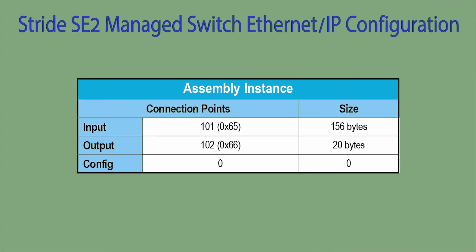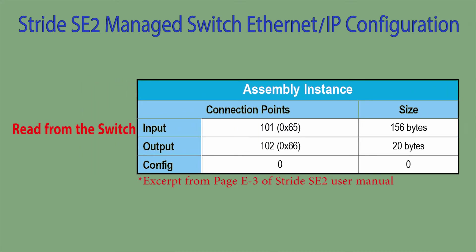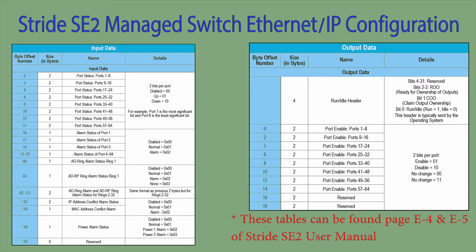To set up implicit Ethernet IP messaging you will need this assembly instance information. This information is what is used to point to the correct memory location and the amount of data contained there. This data is split into the input data block and the output data block. The input data is what we are reading from the Stride switch and the output data is what we are writing to the switch. These tables define the input and output data block mapping. All this information can be found in Appendix E of the Stride SE2 user manual and we will be referring to them later in this video.